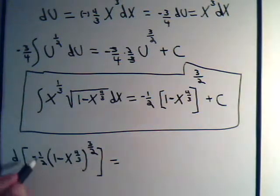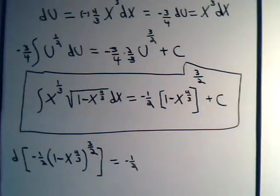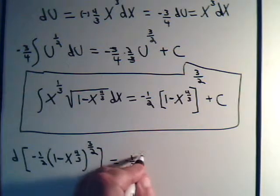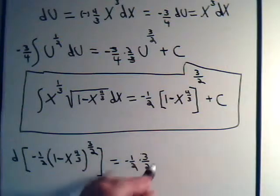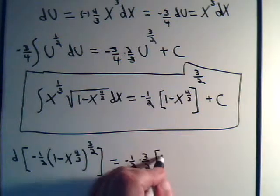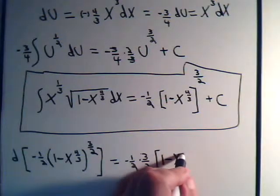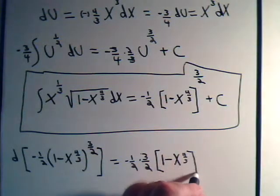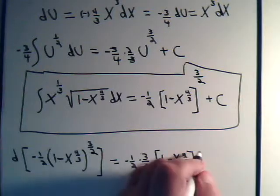So we're going to take the differential of this expression here. And that will give us, we have minus 1/2 here, going down to 3/2. Times 3/2. Then we will have 1 minus x to the 4/3 power. And 3/2 minus 1 is 3/2 minus 2 over 2. That will be 1/2.